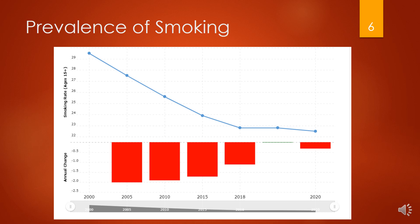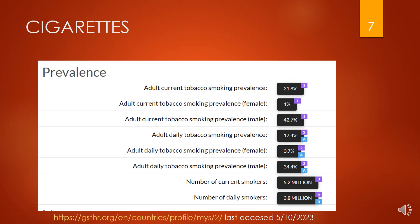Prevalence of smoking: this graph shows the decline in the prevalence of smoking. Even if it is declining, it is still an issue, and we cannot predict whether it will continue declining or increase again. Adult current tobacco smoking prevalence is 21%. Female prevalence is 1%, male prevalence is 42.7%, and adult daily tobacco smoking prevalence is 17.4%.